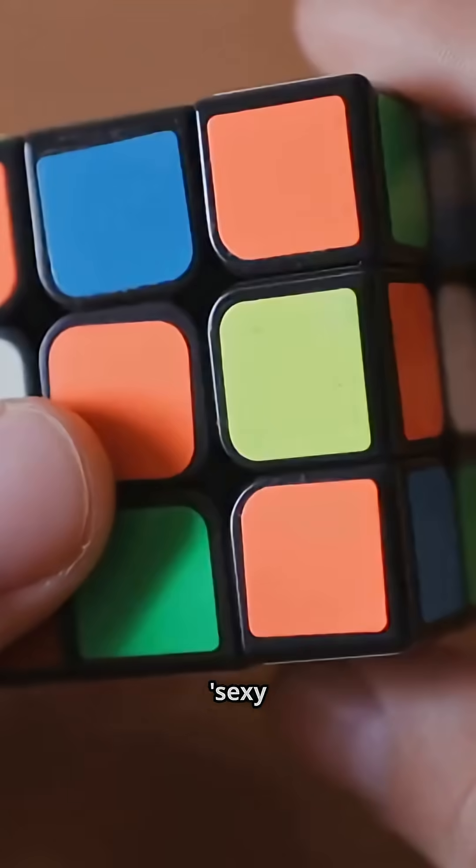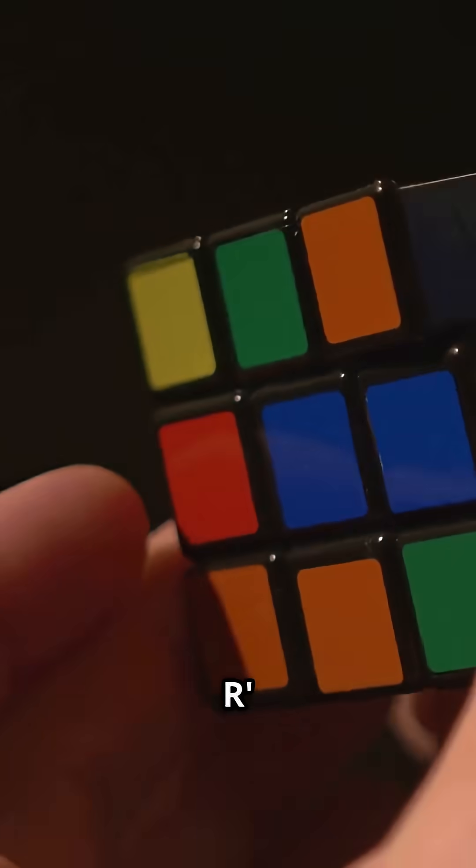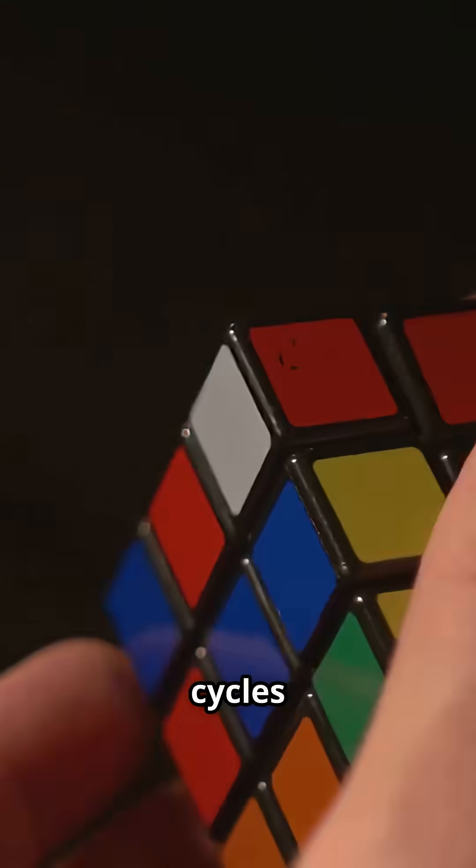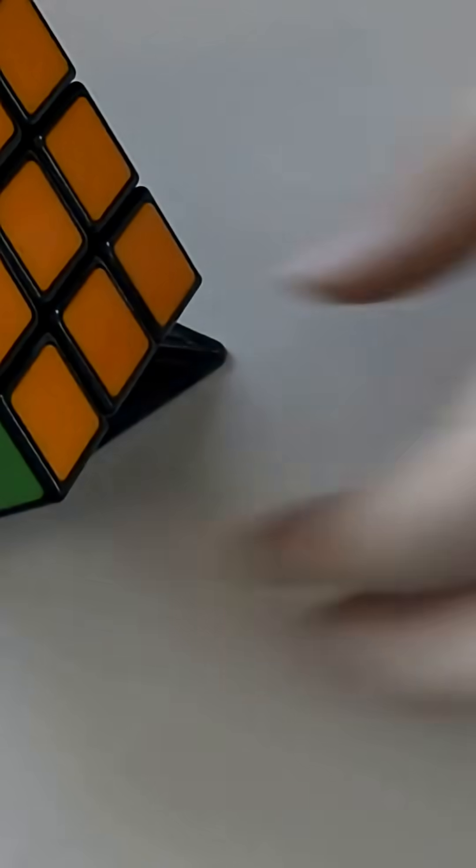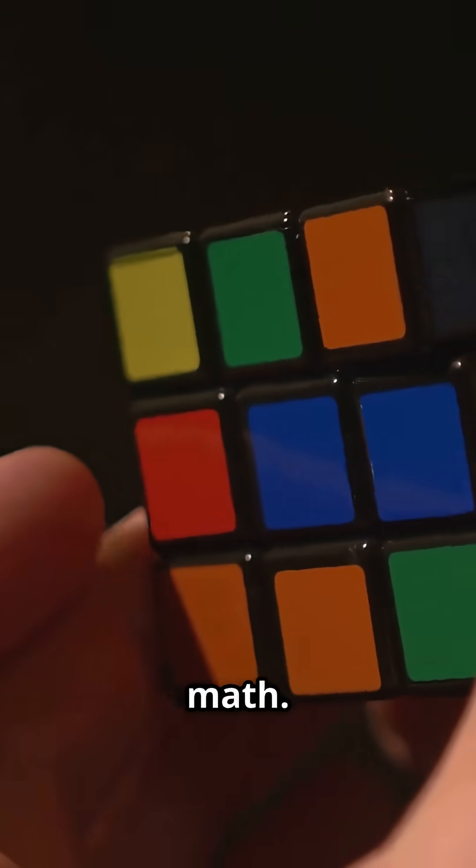Like this, the sexy move, R-U-R-U. That cycles three edges. Repeat it six times. The cube resets like magic, but it's pure math.